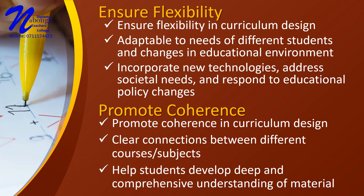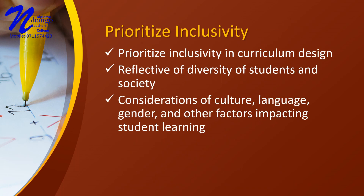Number 5: Ensure flexibility. Design the curriculum to be flexible and adaptable to the needs of different students, as well as to changes in the educational environment. This may involve incorporating new technologies, addressing changing societal needs, or responding to changes in educational policy. Number 6: Promote coherence. Develop a curriculum that is coherent and integrated, with clear connections between different courses or subjects. This helps students to develop a deep and comprehensive understanding of the material. Number 7: Prioritize inclusivity. Design the curriculum to be inclusive and reflective of the diversity of the students and the society in which they live. Considerations of culture, language, gender, and other factors that may impact student learning should be prioritized. By applying these principles of curriculum design, the curriculum will be more effective in promoting student learning and meeting the needs of the educational institution and the society at large.